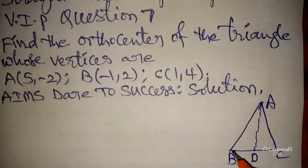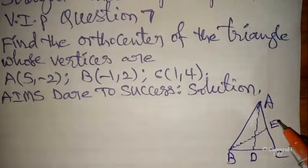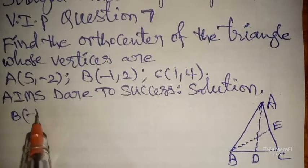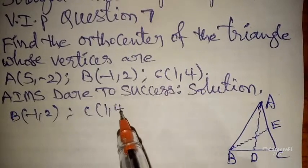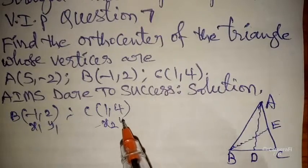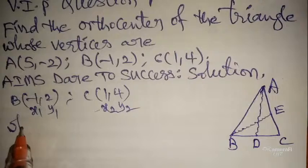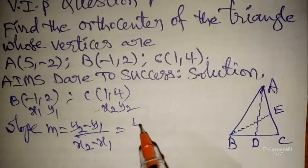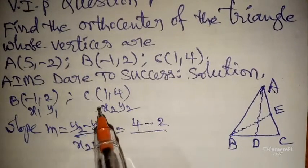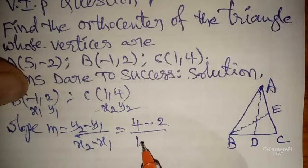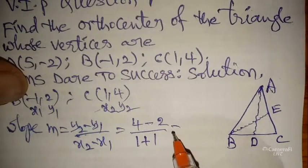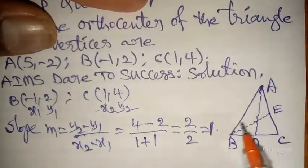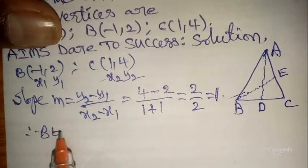From point A, we draw a perpendicular to side BC, meeting at point D. From point B, we draw a perpendicular to side AC, meeting at point E. For side BC, B is (-1, 2) and C is (1, 4). Let these be (x1, y1) and (x2, y2). Slope m = (y2 - y1) / (x2 - x1) = (4 - 2) / (1 - (-1)) = 2 / 2 = 1.